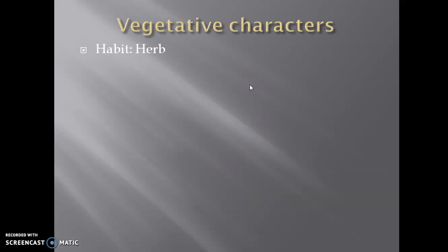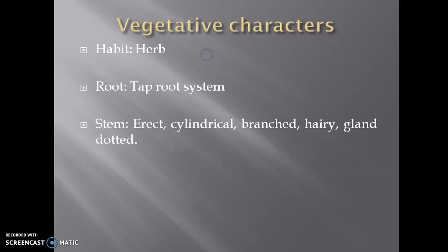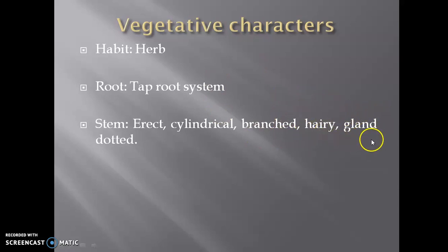Next, the vegetative characters. Under vegetative characters, first comes the habit — according to our photograph it is an herb. About the root system, as they belong to dicots, they show presence of a taproot system. The stem is erect, cylindrical, branched, and the characteristic feature is that the stem is hairy and gland-dotted.